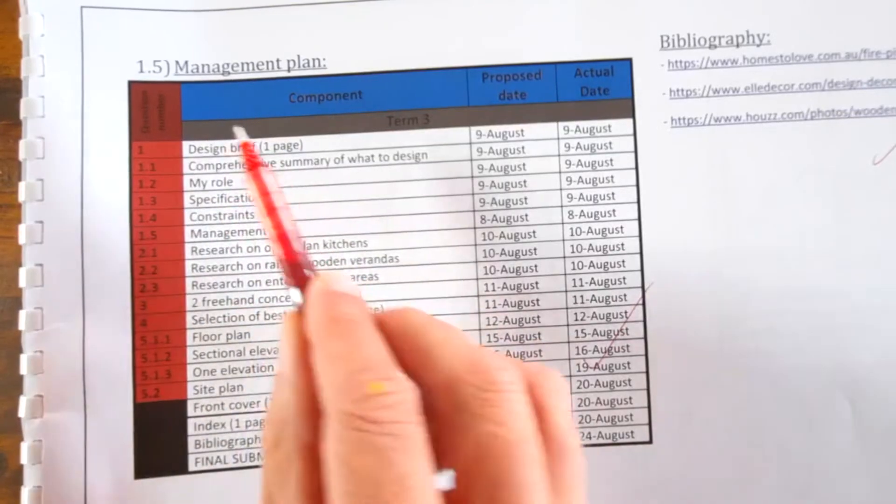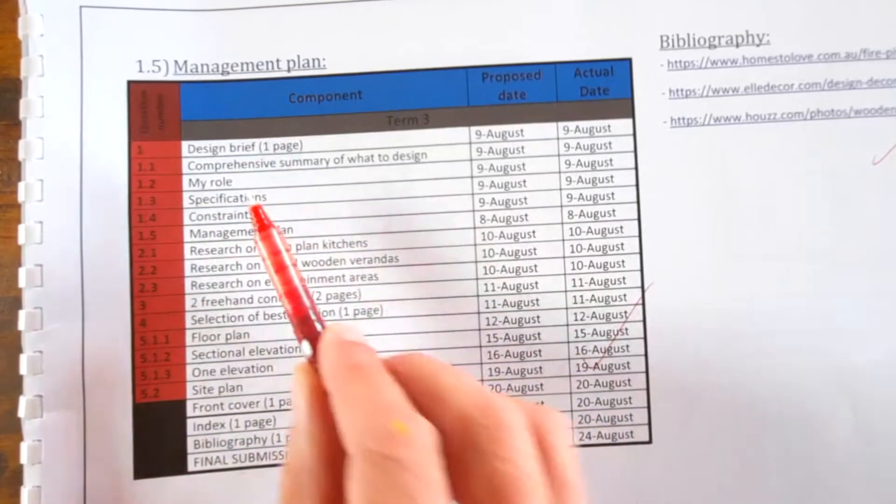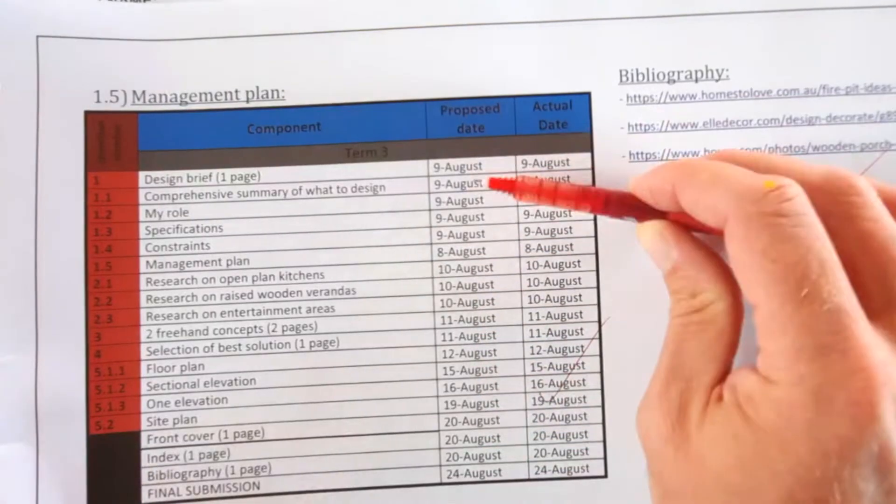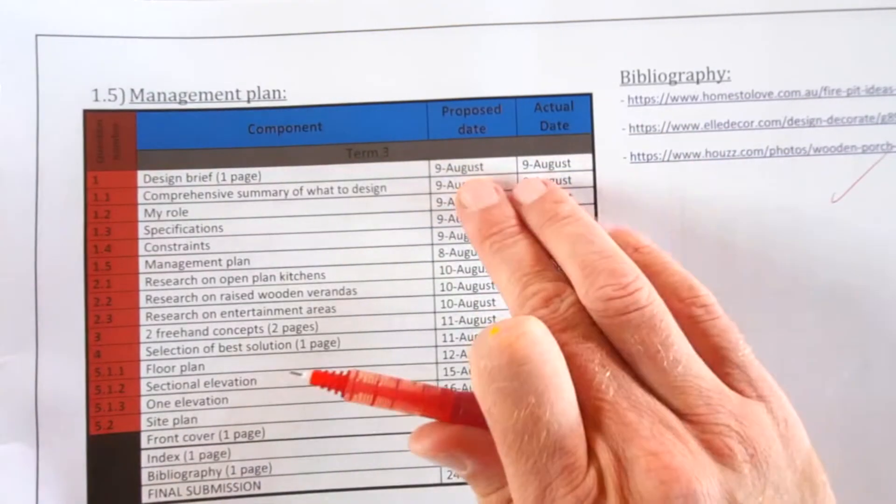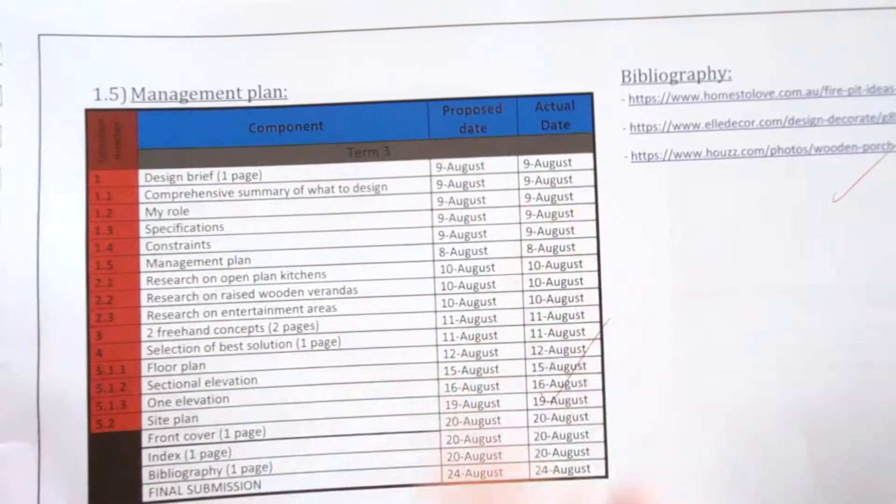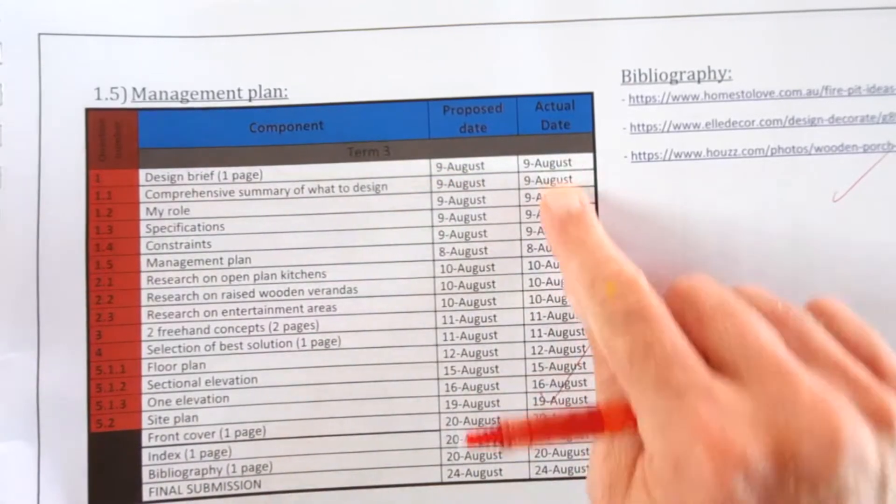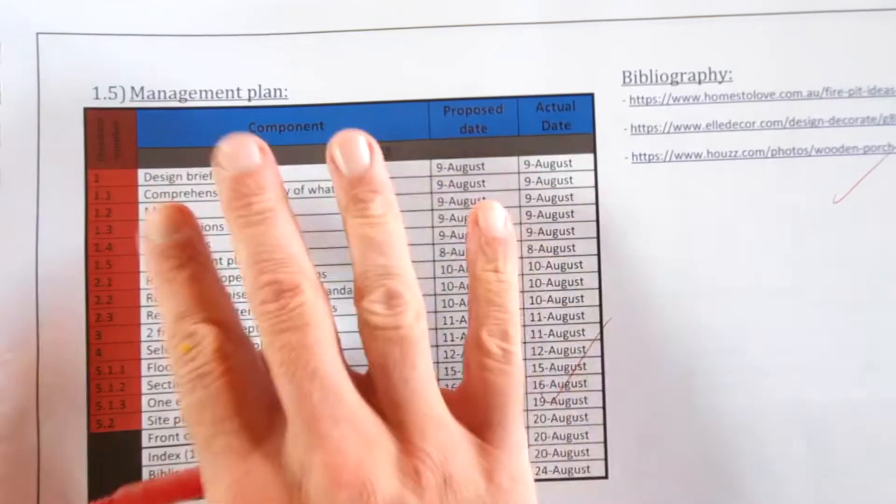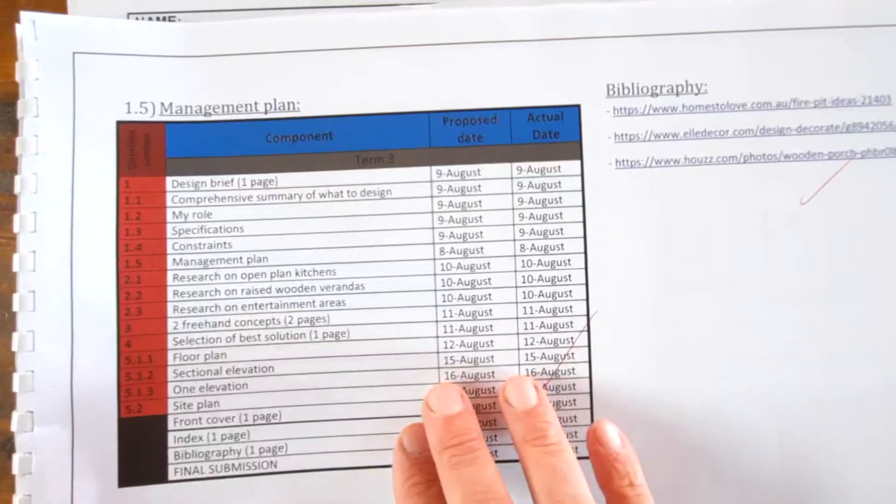Listed it: design brief, comprehensive summary, my role, specifications. Proposed new dates. Now of course these dates will be different according to the management plan provided by your teacher or the PAT sector and the actual date when you did that. That's important. That's an overview of the management plan.